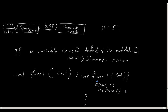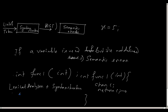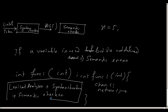So what we have learned is: the lexical analyzer, the syntax checker, and the semantic checker — these three things together constitute what we call the front-end of the compiler.